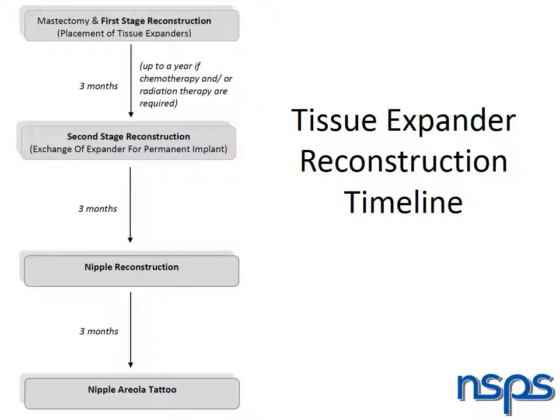This diagram depicts the expected timeline for breast reconstruction with tissue expanders and implants. We will return to this diagram many times as we explore each step in more detail. In general, first stage reconstruction involves the mastectomy and tissue expander placement, and second stage reconstruction involves exchanging the tissue expander for your permanent implant. Surgery for symmetry on your unaffected breasts can occur at your first and/or second stage surgery.